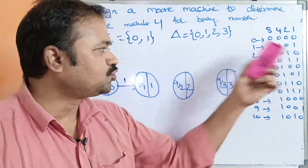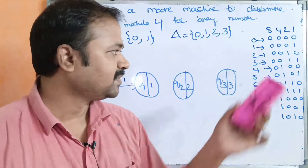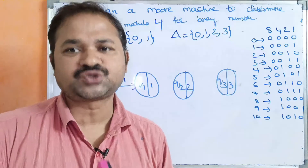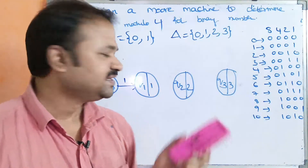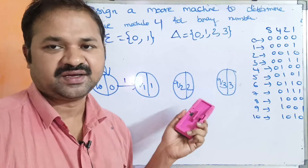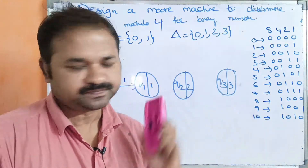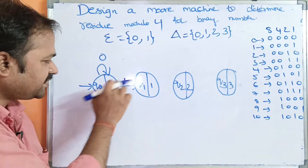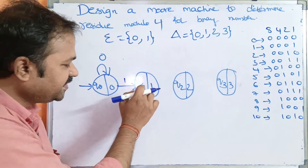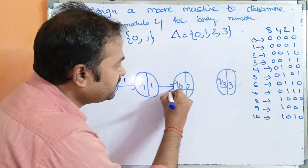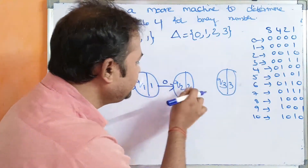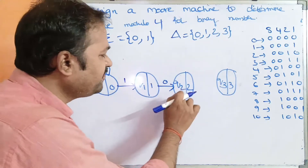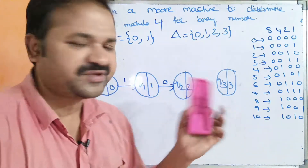Consider 2, which is 0010 in binary. 2 modulo 4 is 2, so we need to be at Q2. Starting at Q0, two zeros keep us at Q0, then applying 1 takes us to Q1, then applying 0 on Q1 takes us to Q2. Output of Q2 is 2.